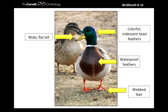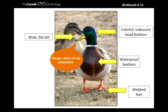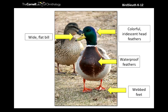Somebody mentioned eyes on the side, which is a really cool adaptation. Critters that are prey have eyes on the sides of their heads to have a wider range of sight, whereas predators tend to have eyes in front for binocular vision. I love that you picked out the colorful iridescent head feathers for mating - hey girl, check out my adaptations! Phoebe also pointed out that the female behind the male is camouflaged with earth-tone colors and speckles that break up her shape.